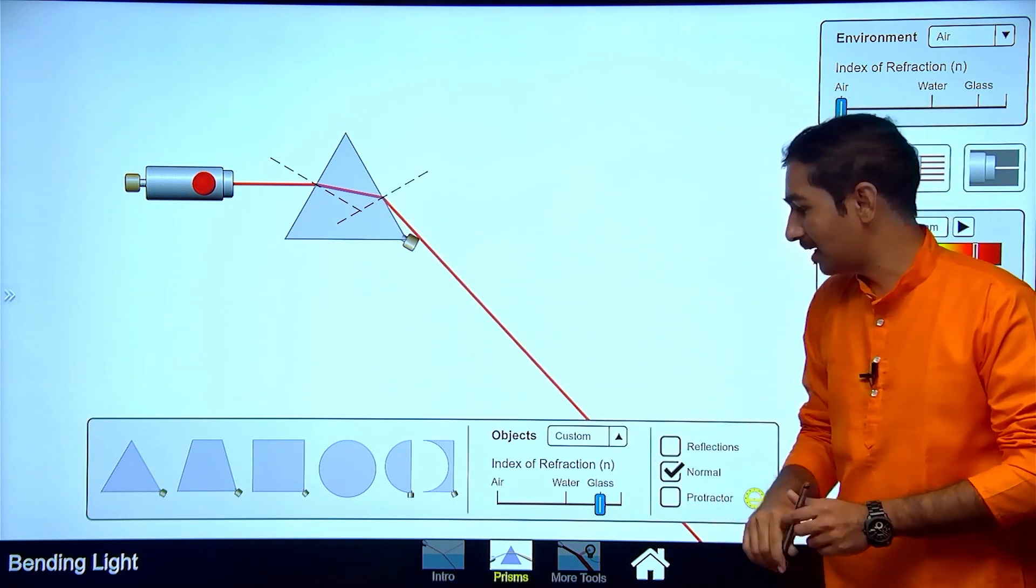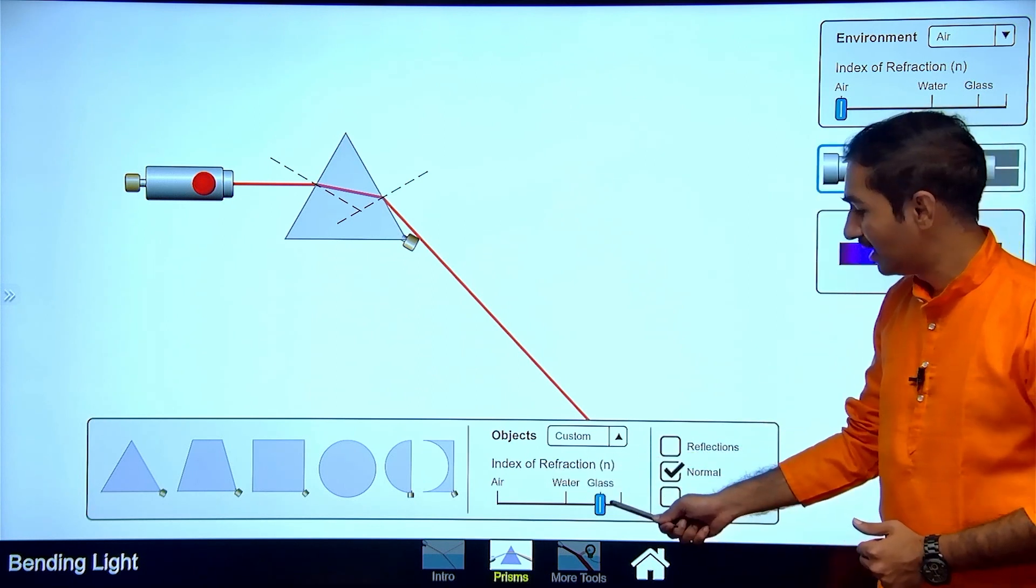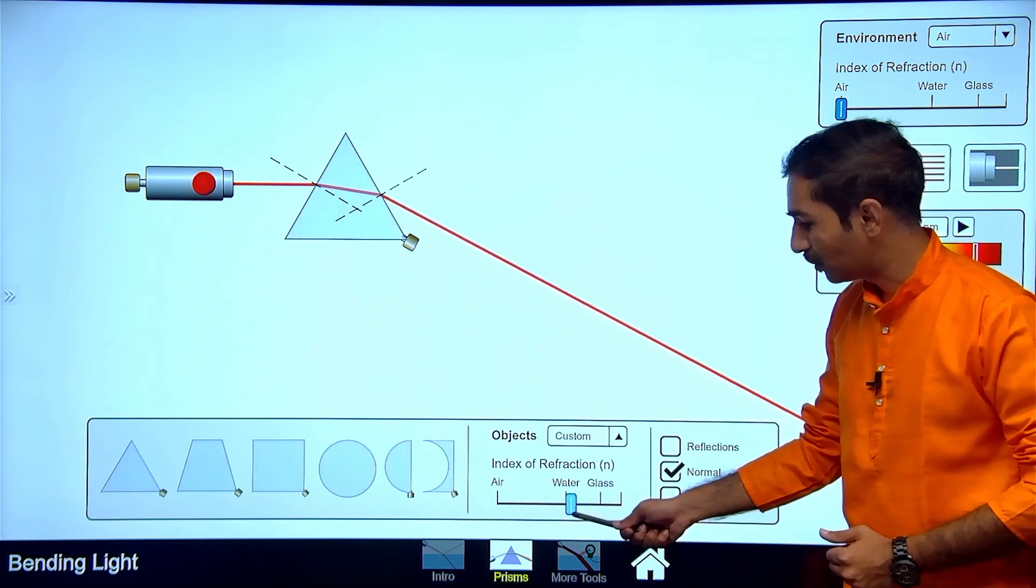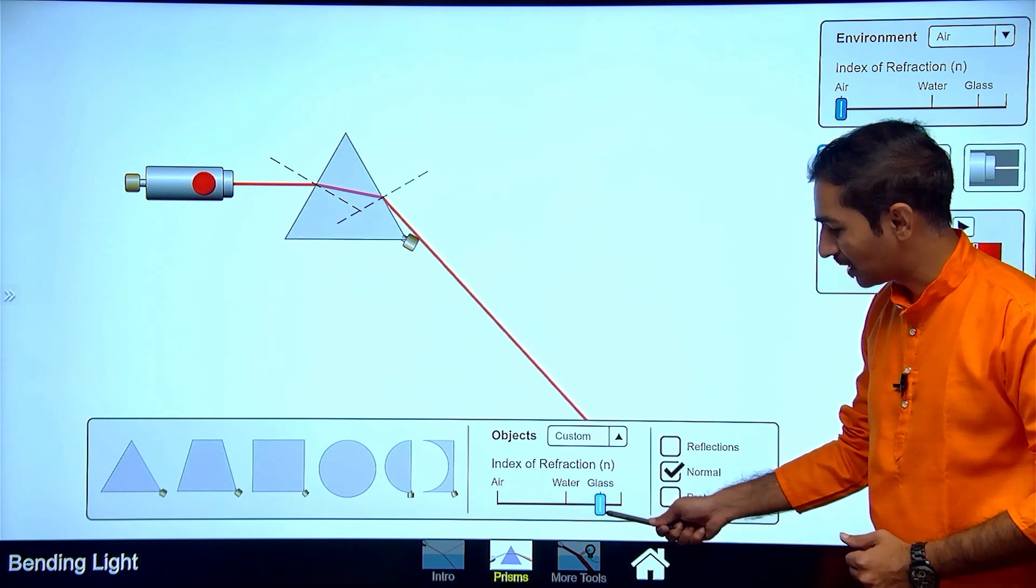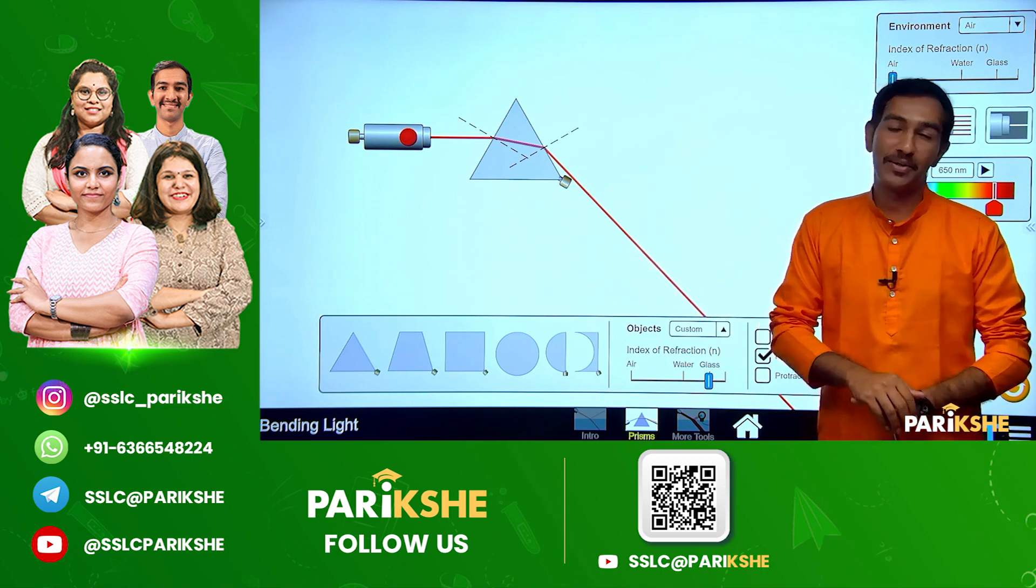So one point to note here - this is index of refraction. So depending on what glass we use, refraction changes, and accordingly bending also changes. See, when refraction increases, bending also increases. So we can choose different types of glass and see how bending of light occurs. Let's go back to the slides.